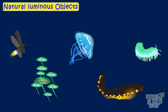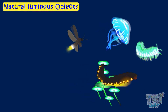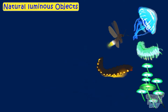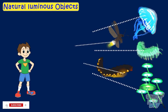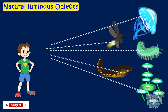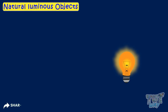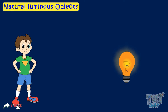We see luminous objects because light emitted by them enters our eyes directly. We see this bulb because the light emitted by it is directly entering our eyes.